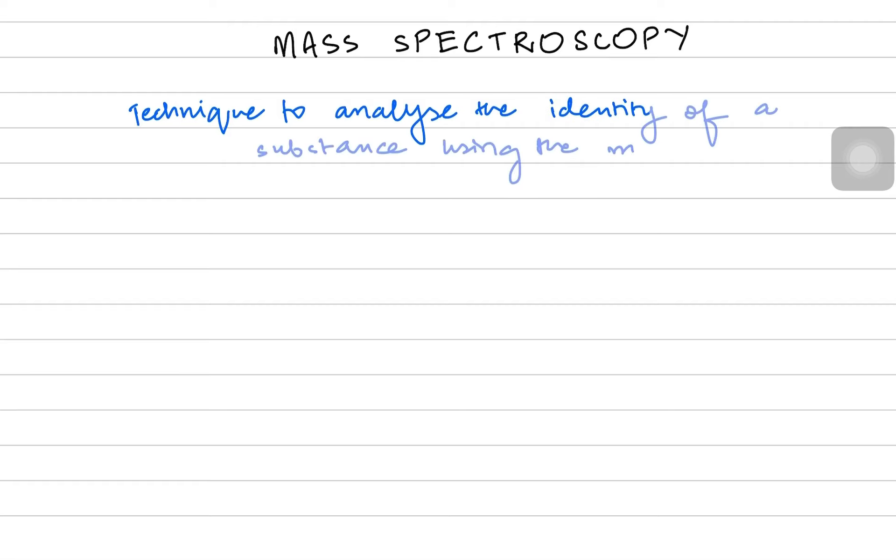Hey everyone, welcome back to another video by Chem Room 5. Today's video is about the mass spectrometer and we're going to see how we can analyze various molecules. Basically it's a technique to analyze the identity of a substance using the masses received after its fragmentation.